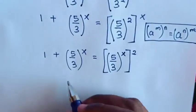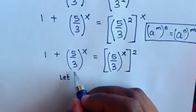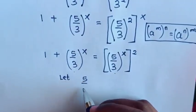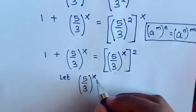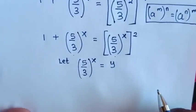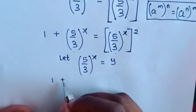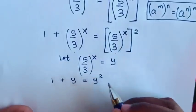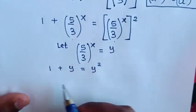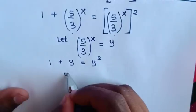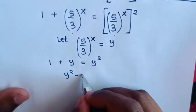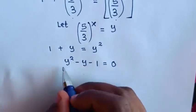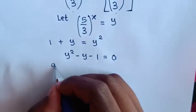In the next step, we will let — because in the equation (5/3) bracket power of x is common — we will let (5/3) bracket power of x equal to y. So in the equation it will be 1 plus y is equal to y squared.